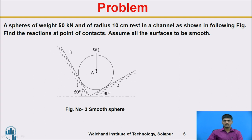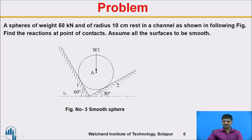Let's discuss one problem. A sphere of weight 50 kN and radius 10 cm rests in a channel as shown in the figure. Find the reactions at the points of contact. Two contacts are present — contact one and contact two. The inclination with respect to the x-axis is 60 degrees on one side and 30 degrees on the other. These are the two contact surfaces. Remove those contact surfaces and show the reactions in the upward direction. We will apply two conditions: Lamy's theorem and the static equilibrium equation.